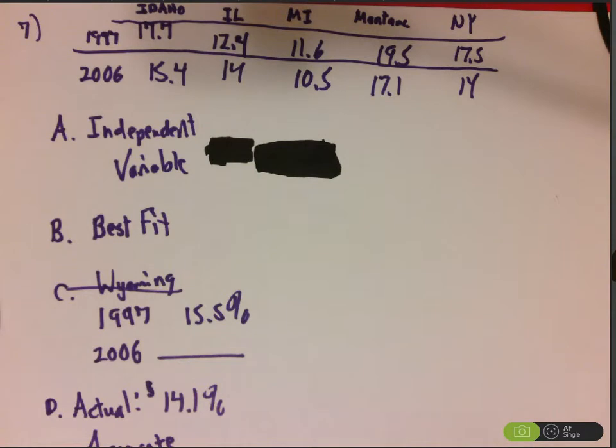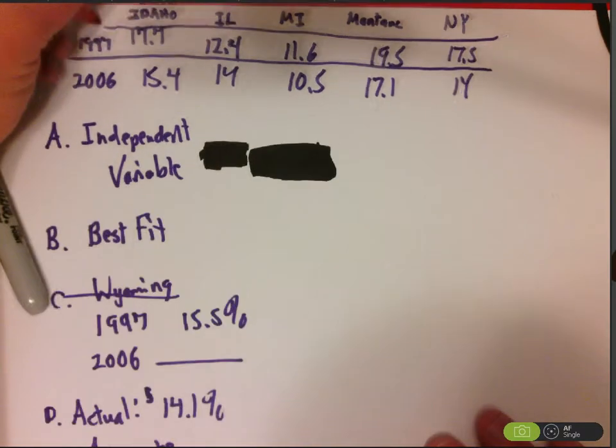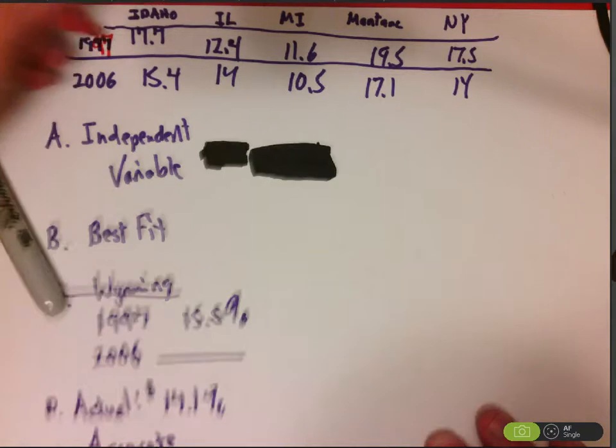All right Jenna, so this is number seven. This question is much like the other ones. They want you to see if there's any correlation between the percentage of the population not covered by health insurance in states in 1997, that's what that purple number is right there, it's 97, and 2006.